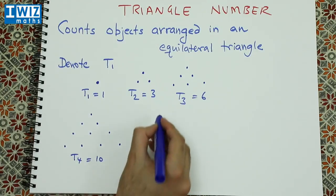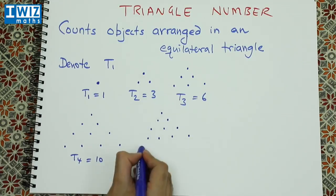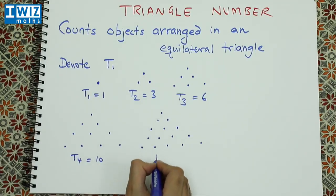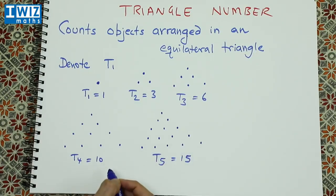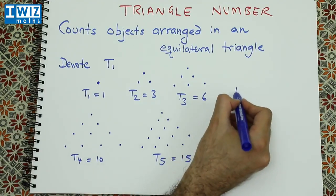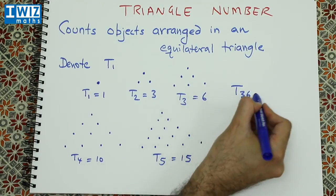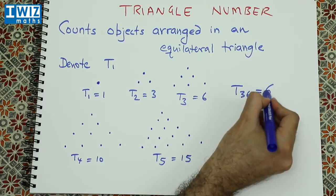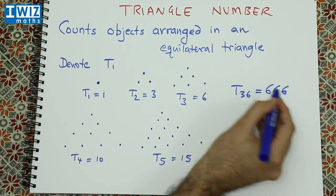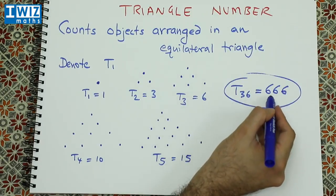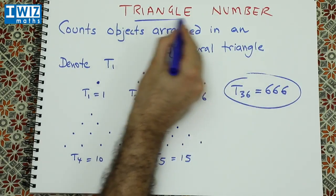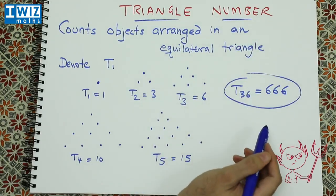Let's do one more. T5 equals 15. And if you carry on in this way, what we find is that T36 is actually 666. So 666 is a triangle number.